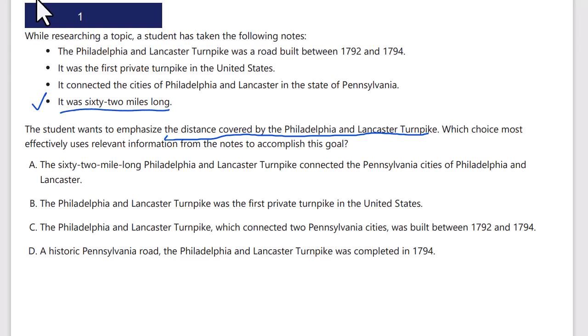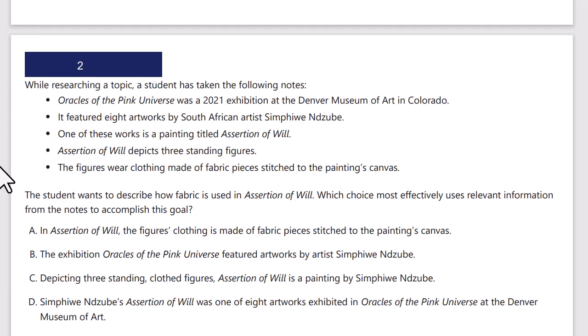So I need to emphasize this point: 'The 62-mile-long Philadelphia-Lancaster Turnpike connected the Pennsylvania cities of Philadelphia and Lancaster.' Yes, that states what it does and emphasizes the distance — that's probably the right answer. Let's check B, C, and D. B says nothing about distance; C focuses on when it was built; D focuses on when it was completed or that it's historic. We want to emphasize distance only — only A does that.